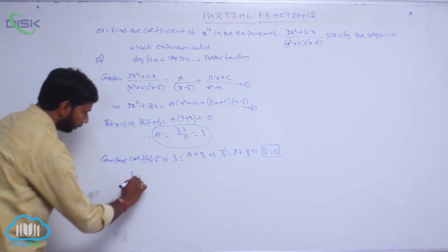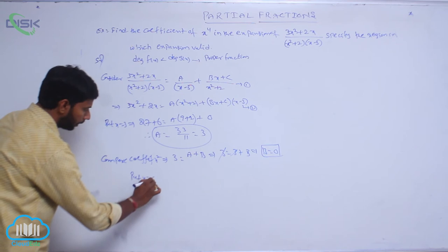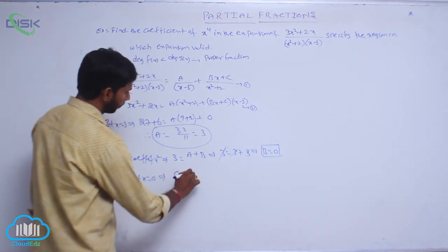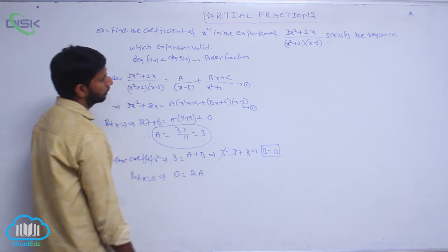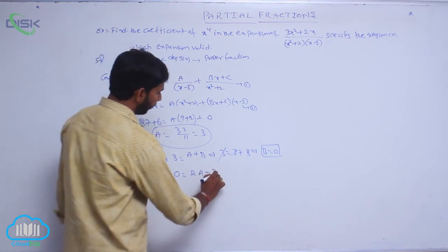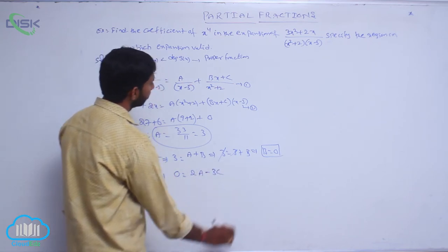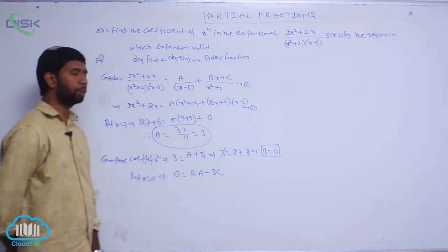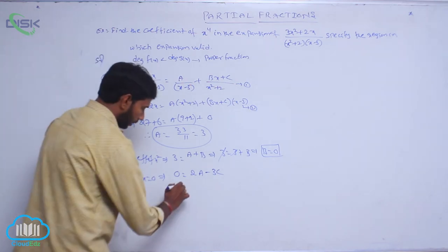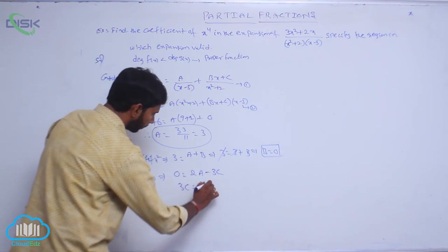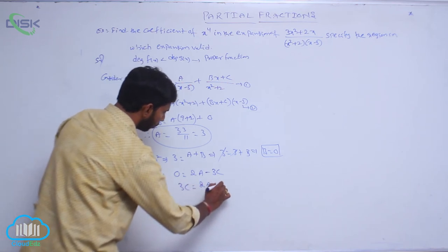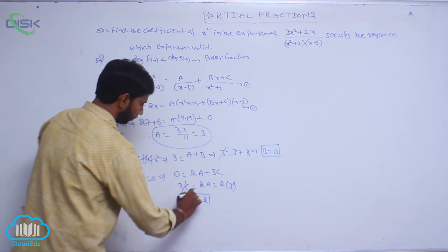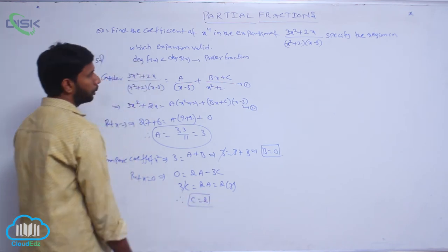Put x = 0 on both sides. That gives 0 = 2A - 3C. Therefore 3C = 2A = 2(3) = 6, so C = 2.